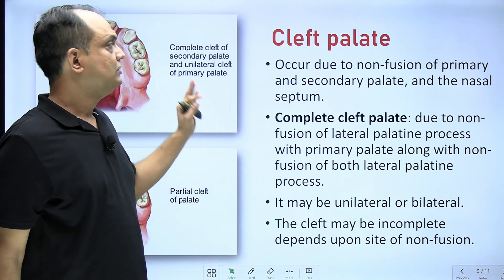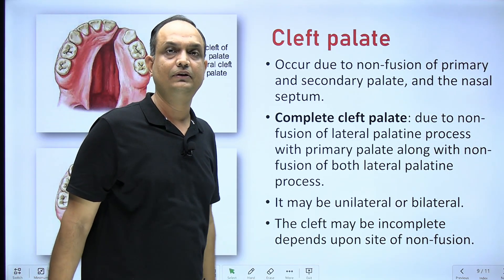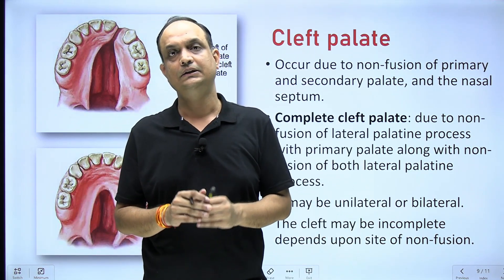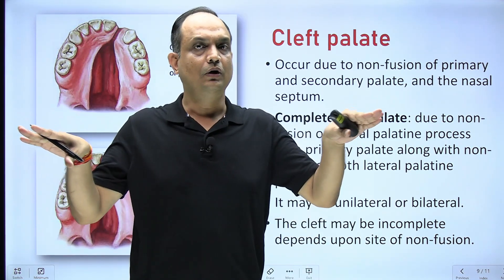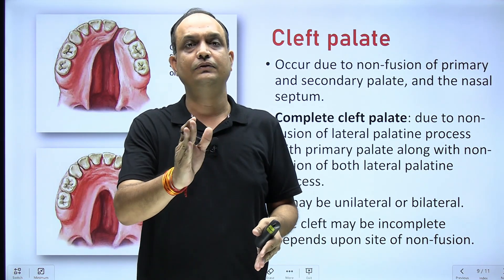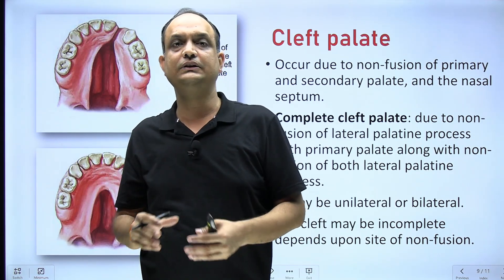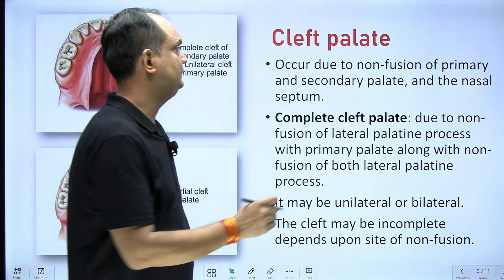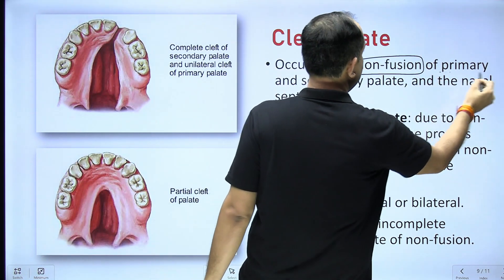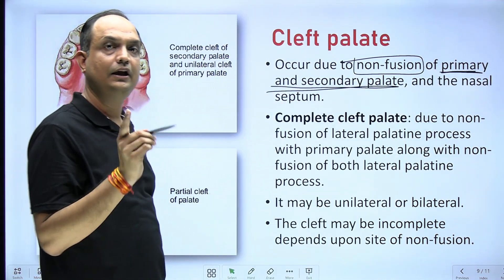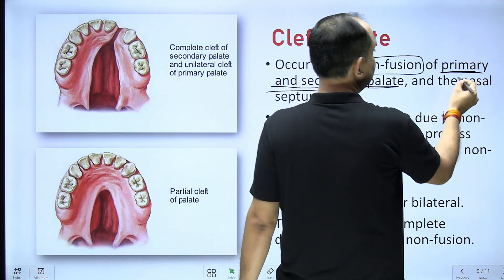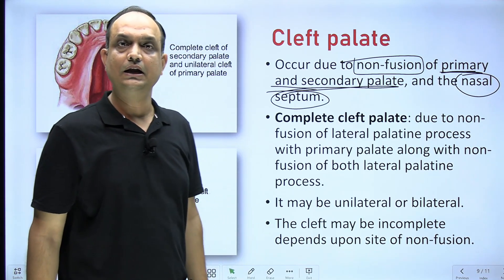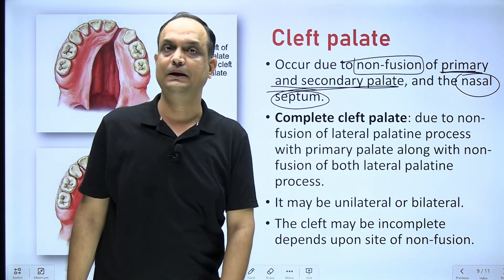Now for the applied anatomy — cleft palate, the most common question of this session. Cleft palate means non-fusion of the segments of the definitive palate. If the two horizontal shelves do not fuse with each other, there is a fissure. If the primary palate does not fuse with the secondary palate, there is a defect. Additionally, if there is non-fusion with the nasal septum, there is a fissure in the hard palate.